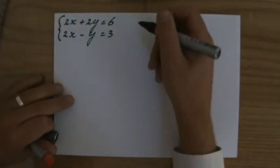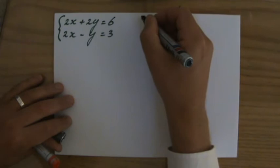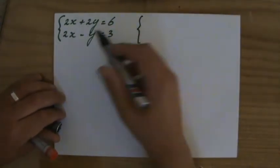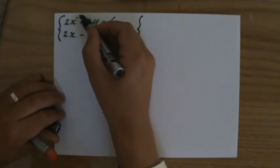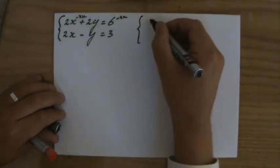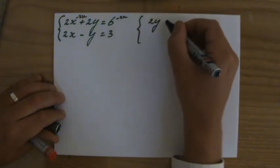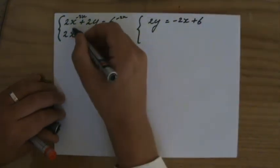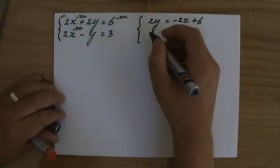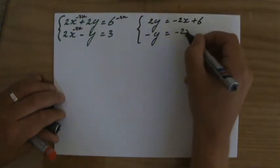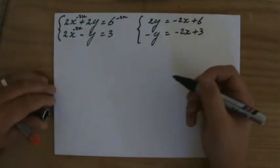Okay, so I hope you were successful. Let's rearrange those equations. So first I'll get rid of those 2x's there, so I have to take away 2x on the other side, so it will say 2y equals minus 2x plus 6. And I'll do the same over here, take away 2x, minus y equals minus 2x plus 3. Good, one step closer.